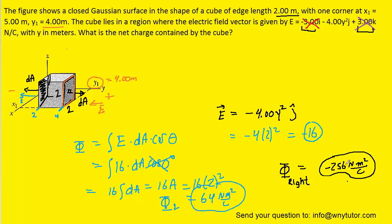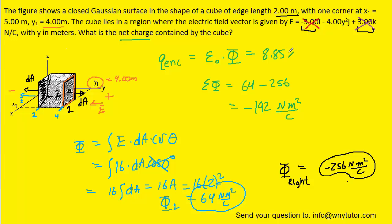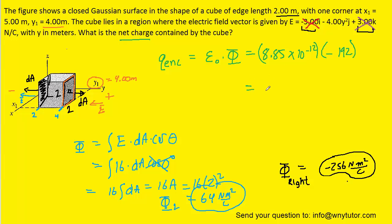All we have to do is add that flux to the flux that was traveling through the right face. So we'll take the 64 and we'll add it to the negative 256, and we end up with negative 192 newton meters squared per coulomb. This is the total flux, which we can now finally use to get the net charge using Gauss's Law. Gauss's Law tells us that the net charge enclosed within the cube is equal to a constant multiplied by the electric flux. This constant has a value of 8.85 times 10 to the minus 12, and we just figured out the total electric flux, so we can plug that in as well. When we multiply this out, we're going to get roughly negative 1.70 times 10 to the minus 9 coulombs. So this is the correct answer to the question.